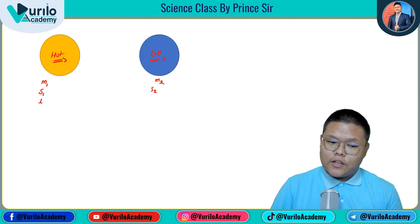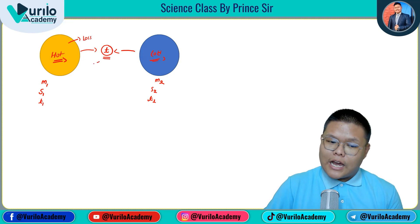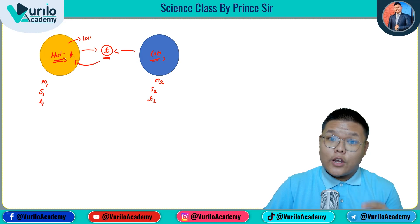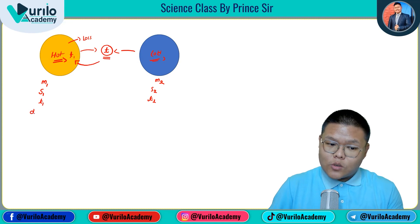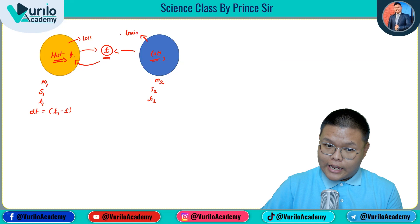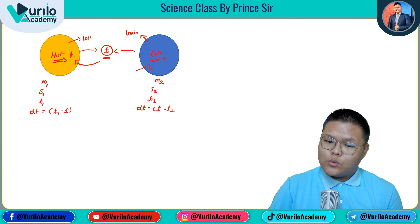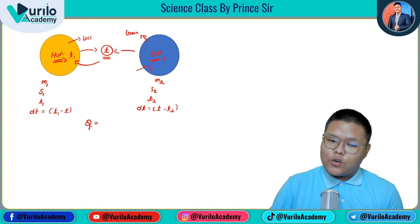We have hot water at temperature T1 and cold water at temperature T2. We mix these two. The final temperature is T. For the hot object, the change in temperature is T1 minus T. For the cold object, the heat is gained, and the change in temperature is T minus T2.